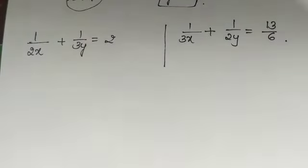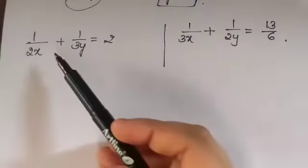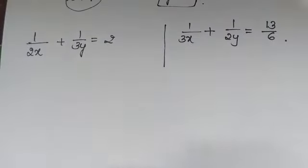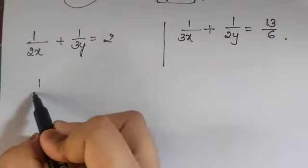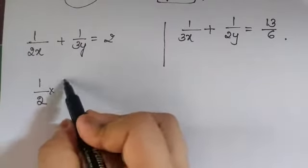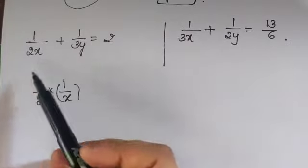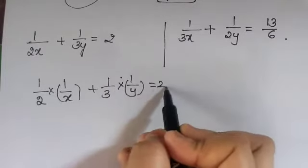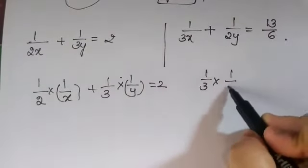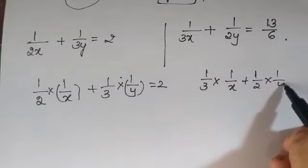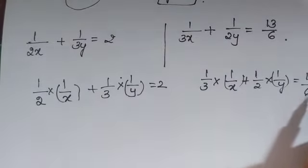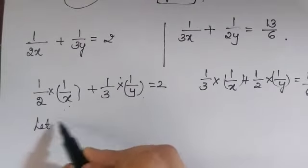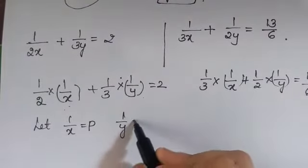Now let us take the first problem from the exercise: 1 by (2x) plus 1 by (3y) equals 2, and 1 by (3x) plus 1 by (2y) equals 13 by 6. I can rewrite this as 1/2 times (1/x) plus 1/3 times (1/y) equals 2. That means 1/x and 1/y are common in both equations. So let us take 1 by x as p and 1 by y as q.